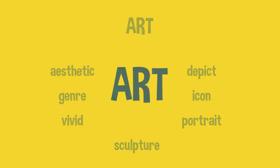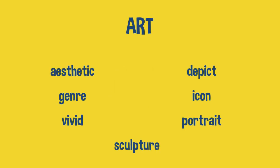In this lecture we're going to be looking at seven words connected with art. Here are the seven words: aesthetic, depict, genre, icon, vivid, portrait, and sculpture.